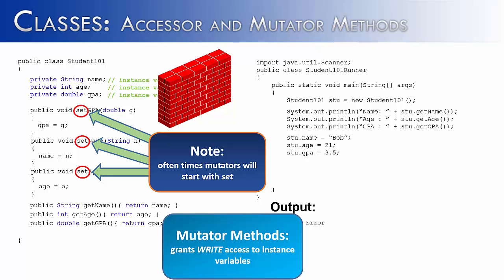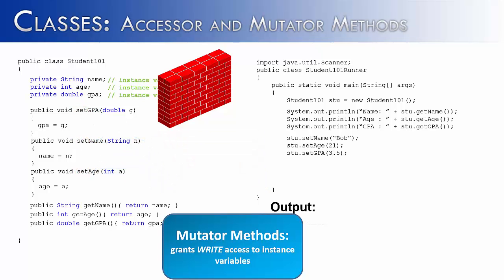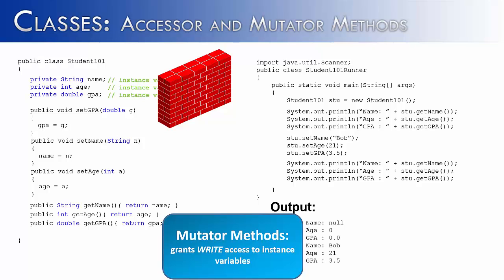Let's see if this works to get around our wall and change the values. Instead of saying stu.name equals Bob, we say stu.setName Bob, stu.setAge 21, and stu.setGPA to change the three instance variables. To test if it works, we use our get methods again and see what the output is. The output is null, 0, 0.0, Bob, 21, and 3.5. The first three lines come from these three lines, and the last three lines come from these three lines after the instance variable state has been changed.